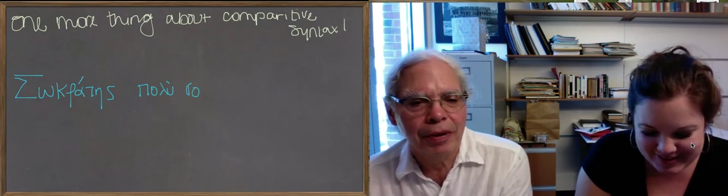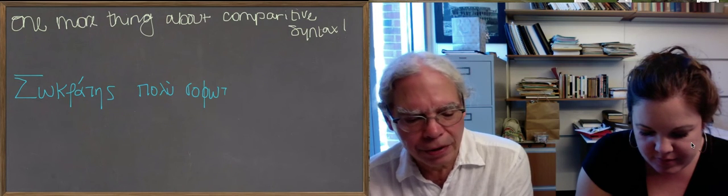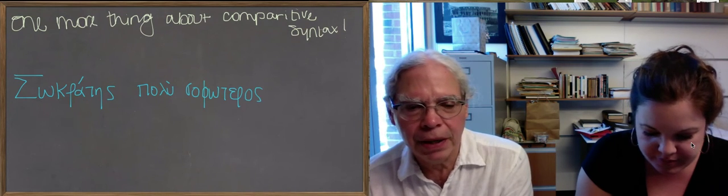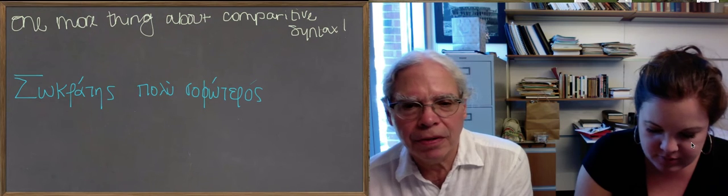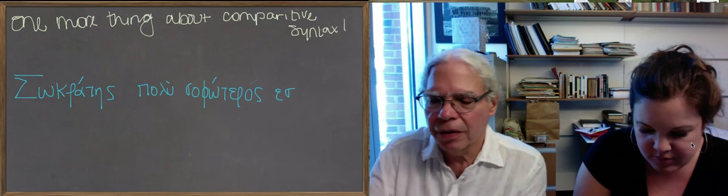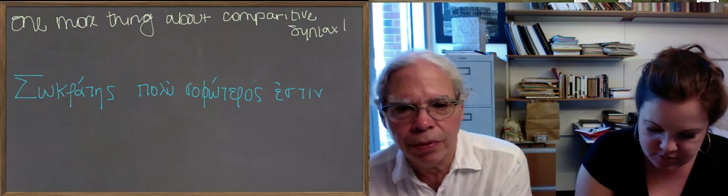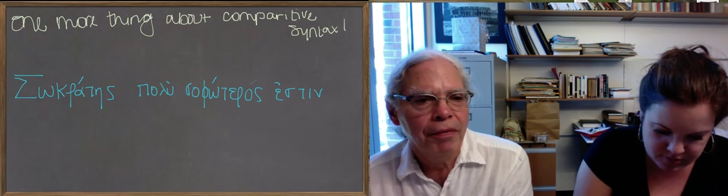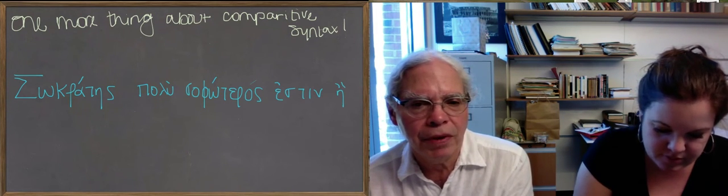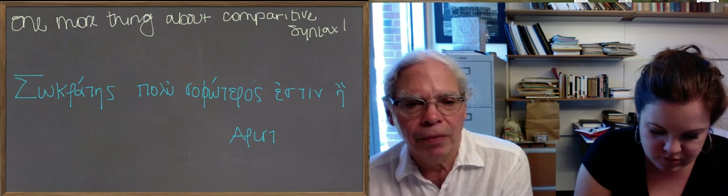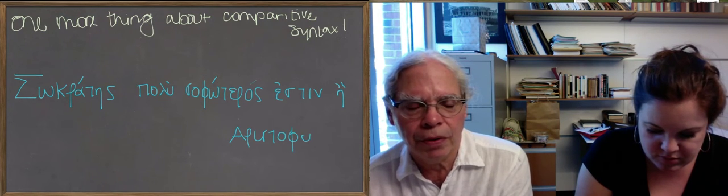All right. So I realized we're going to talk about the inflection of the verb εἰμί to go, but I realized after we finished talking about the syntax of superlatives that I forgot something, which is the use of the adverbial accusative with comparatives and superlatives.